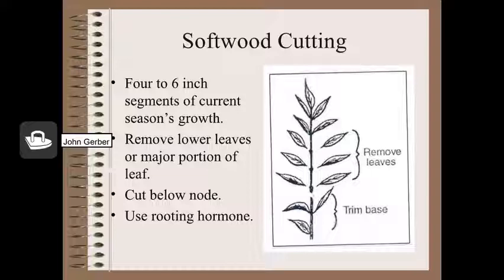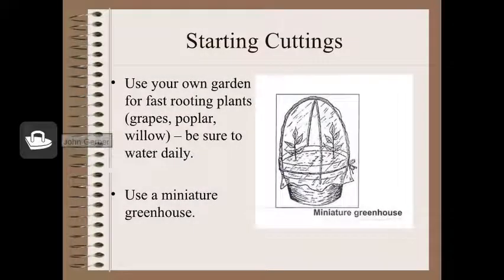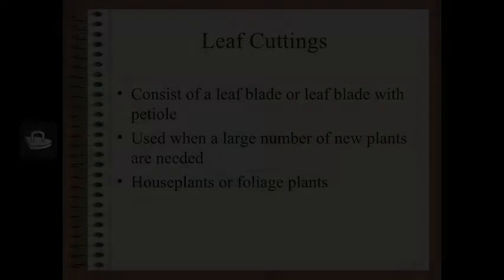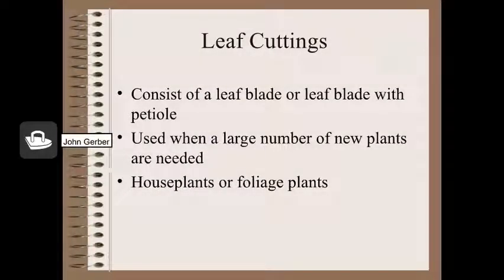Softwood cuttings of shrubs, for example, are easier to root. Segments of four to six inches are generally cut. Lower leaves are often pulled off and rooting hormone will be applied at the base where the cut occurs. Since a new cutting has no root system, keeping the plants in a high humidity environment is really important. Leaf cuttings consist of a leaf blade or a leaf blade with a petiole sometimes attached. Leaf cuttings are used when plant material is scarce and large numbers of new plants are needed fast. House plants or foliage plants are often propagated this way — snake plants, begonias, African violets, for example.